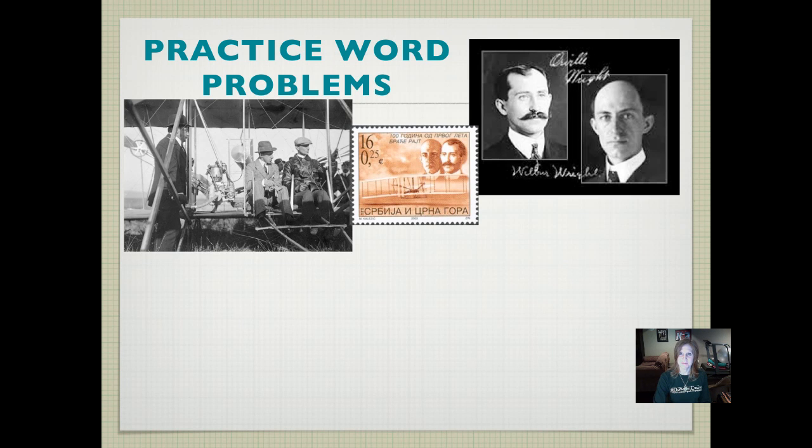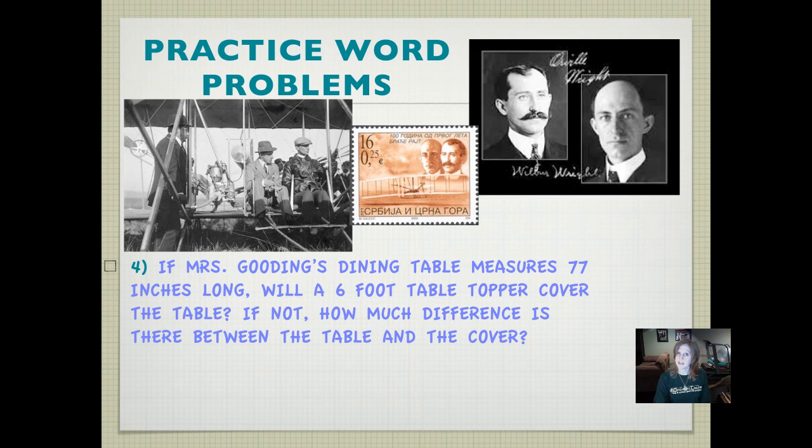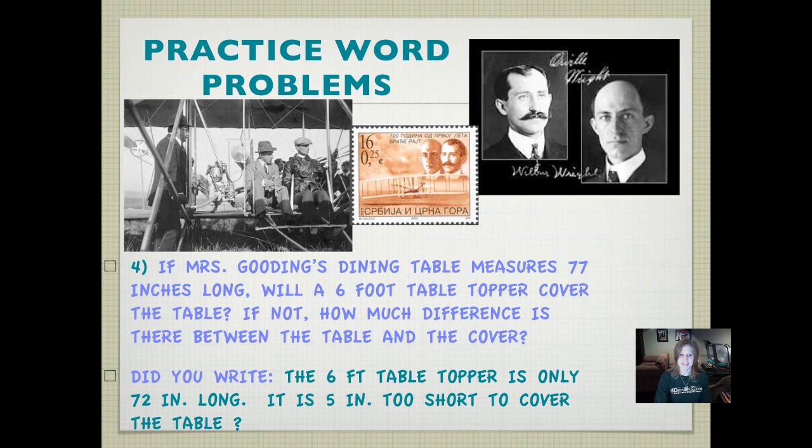It's time to practice our word problems. If Mrs. Gooding's dining table measures 77 inches long, will a 6-foot table topper cover the table? If not, how much difference is there between the table and the cover? Go ahead and think about what that's asking you. What are you trying to figure out? Are you converting? What are you doing? Pause it and push play when you've done the work. I hope you remember to write your complete sentence. The answer was, no. Did you write something like, it doesn't have to be exactly this, the 6-foot table topper is only 72 inches long. It is 5 inches too short to cover the table. That would be the sentence. But let's go ahead and see how we figure that out.